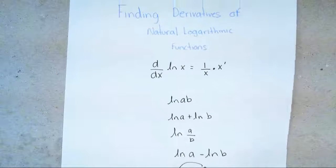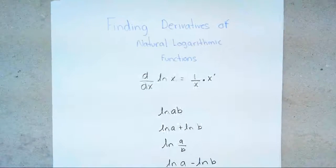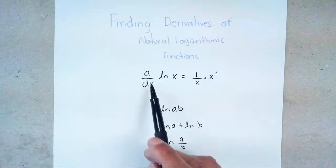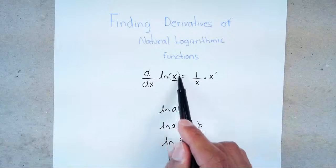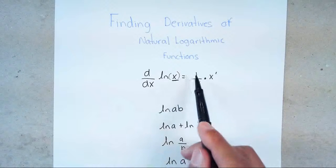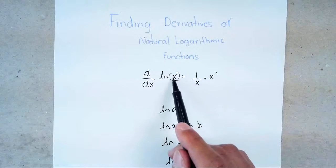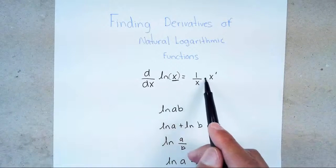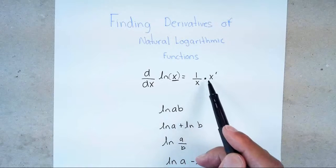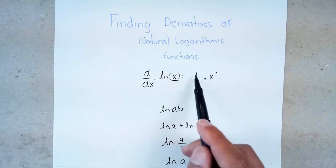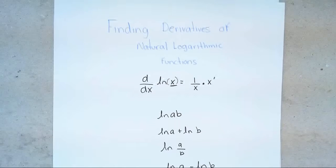You also have to know the derivative formula for ln. The formula is: 1 over the inside, times the derivative of whatever the inside is. Because the argument will be inside parentheses, the derivative of ln is simply 1 over the inside times the derivative of the inside. Let's go ahead and do a couple of examples.